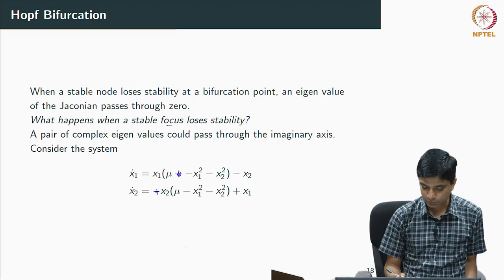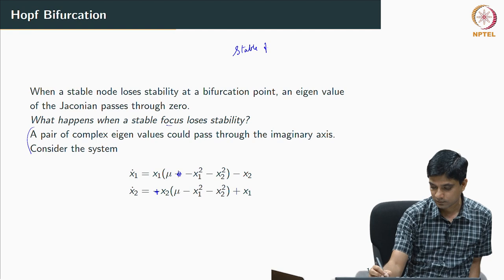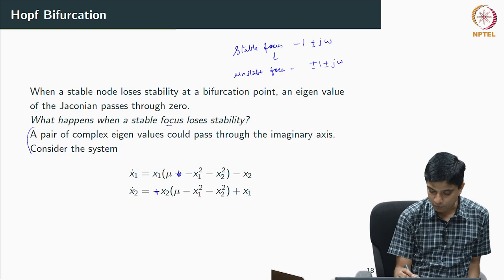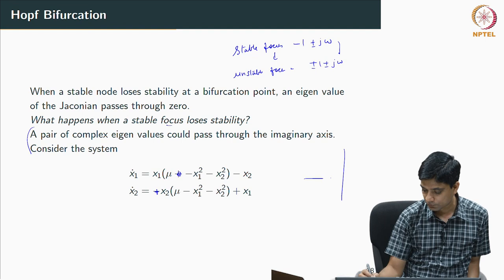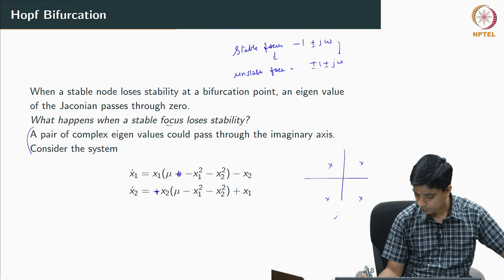What is essentially happening in this case is when you change from a stable focus with eigenvalues (-1 ± jω) to an unstable focus with eigenvalues (+1 ± jω), a pair of complex eigenvalues passes through the imaginary axis. At the bifurcation point mu = 0, eigenvalues pass through the imaginary axis. This is a bit of the qualitative behavior of how equilibrium points can change with changes in the system parameter.